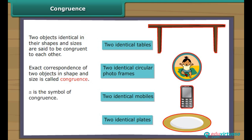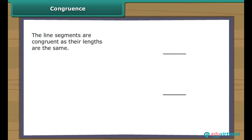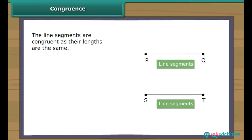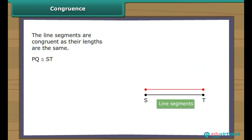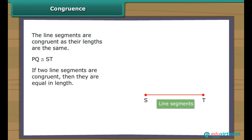Exact correspondence of two objects in shape and size is called congruence. This is the symbol of congruence. Here are two line segments PQ and ST. We will check if they are congruent. The line segments are congruent as their lengths are the same. It is also true that if two line segments are congruent, then they are equal in length.